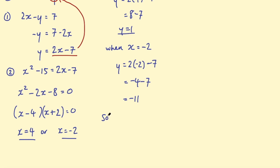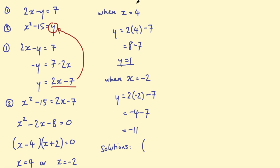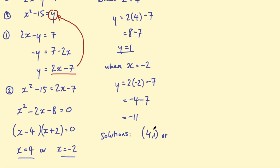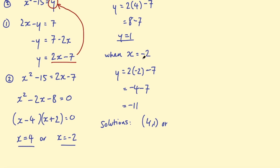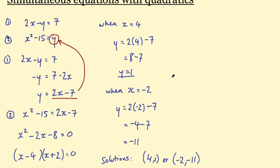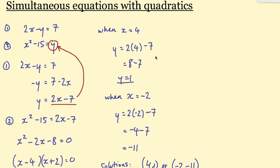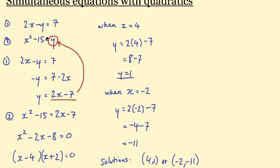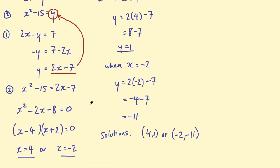So my solutions are: the first pair is x equals 4 and y equals 1, and my second pair is x equals minus 2 and y equals minus 11. So the solutions are (4, 1) or (minus 2, minus 11). That's the basic approach to solving simultaneous equations with quadratics — you take one equation, rearrange it in the form of one variable such as y, and substitute it into the second equation. I'll go through a few more examples.